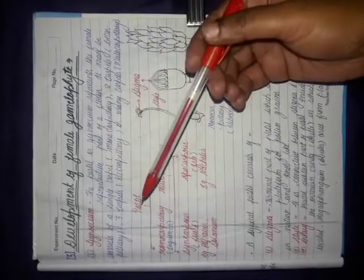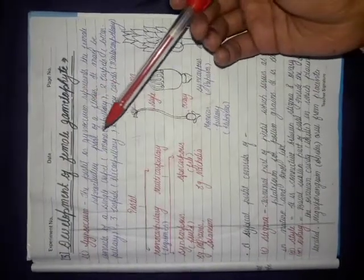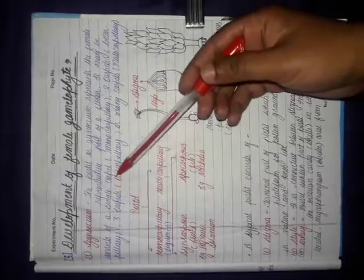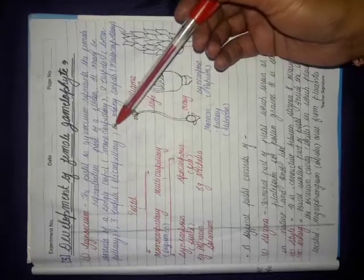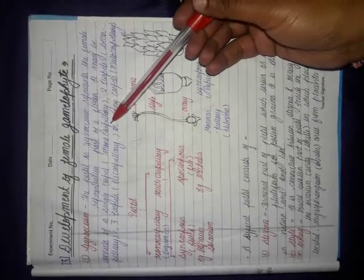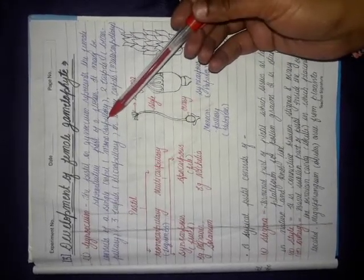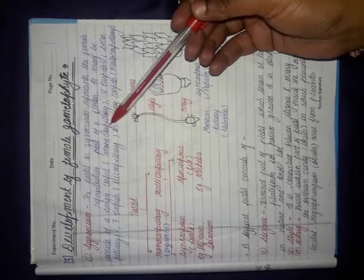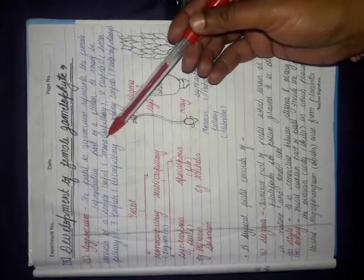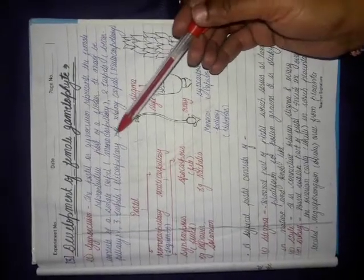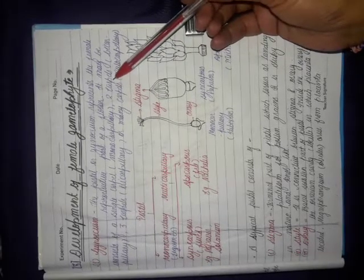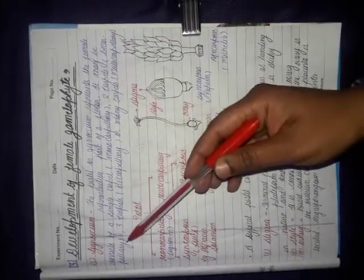The flower may be monocarpellary, bicarpellary, tricarpellary, and multicarpellary. If a flower contains a single carpel or single pistil, then the flower is known as monocarpellary. The example of monocarpellary flowers is the family Leguminaceae. When the flower contains two carpels, this condition is called bicarpellary.